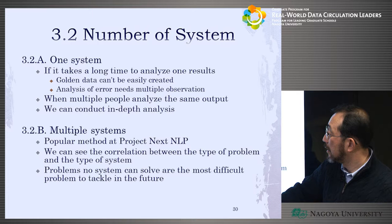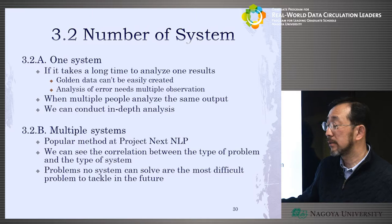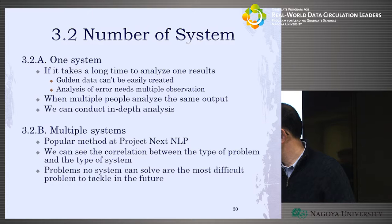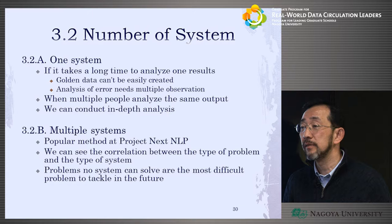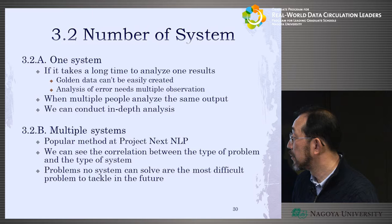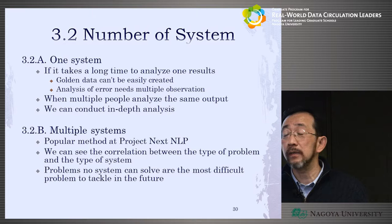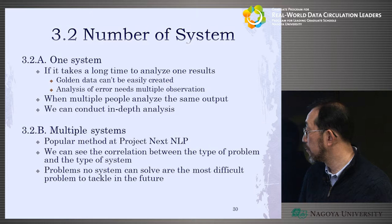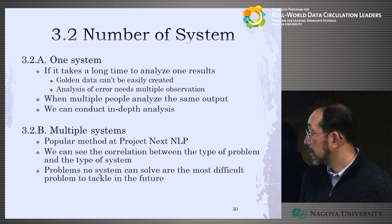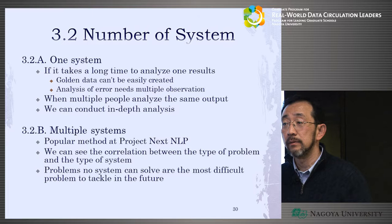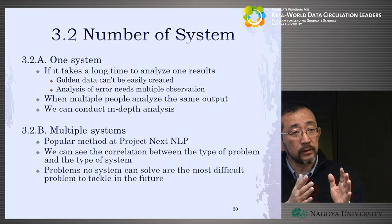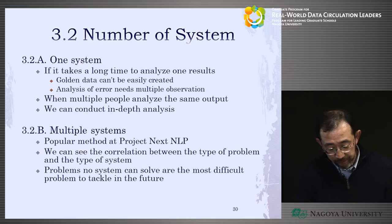Multiple systems is a popular method in this NLP project — many people use multiple systems. If we use multiple systems, we can see the correlation between the type of problem and the type of system. For example, with different machine translation systems — rule-based, statistical-based — we can find correlations about why rule-based makes certain mistakes. Also, problems that no system can solve are the most difficult problems to tackle in the future.